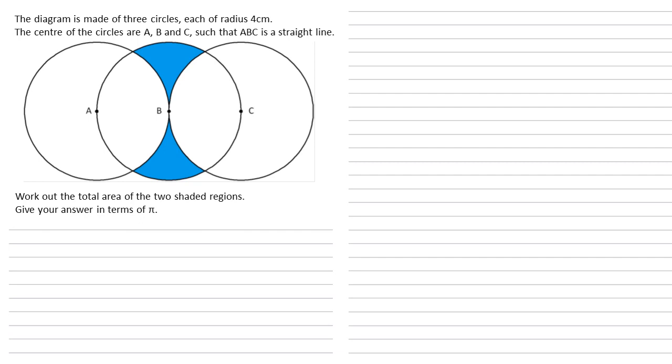We're going to look at the last question from the Edexcel non-calculator paper this year which appears to have got quite a few people confused. The question is: the diagram is made of three circles, each of radius 4 centimeters. The center of the circles are A, B and C such that ABC is a straight line. We need to work out the total area of the two shaded regions and give our answer in terms of π.